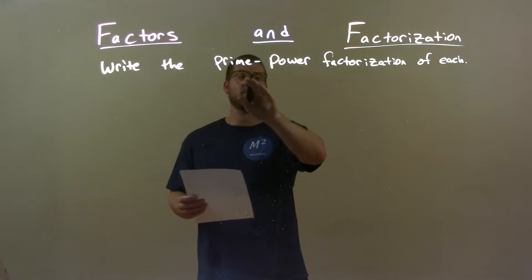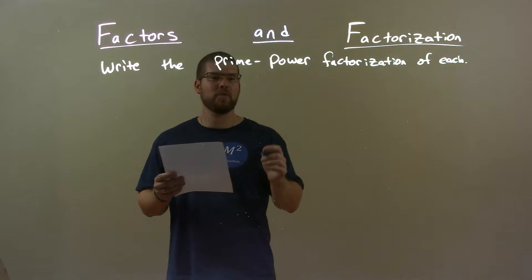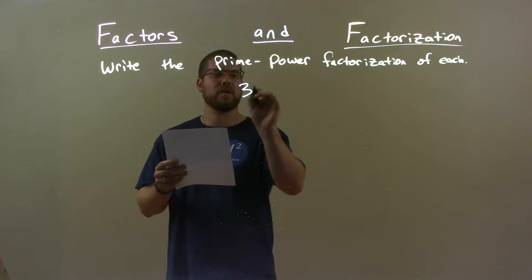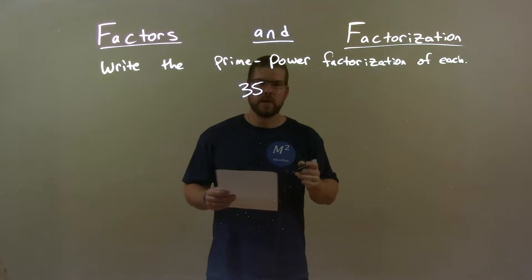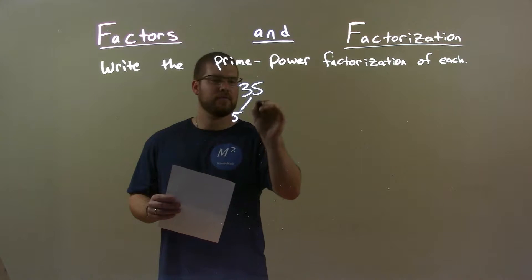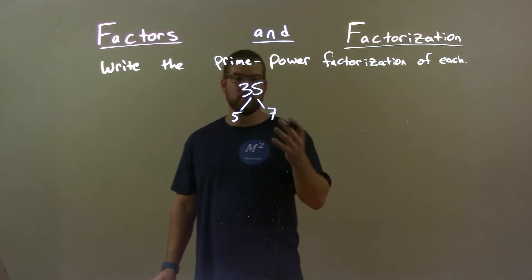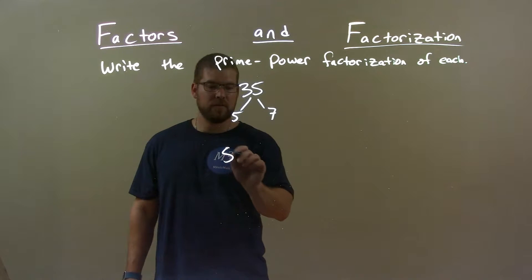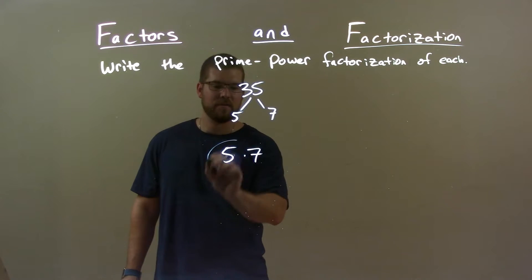I'm going to write the prime power factorization of each. So, if I was given this number — 35 — well, 35 breaks down to prime numbers as just 5 times 7. And that's it. There are no more prime numbers. So this one's actually very easy. It's just 5 times 7.